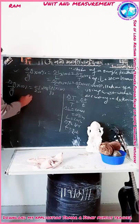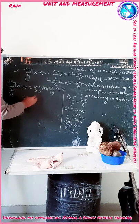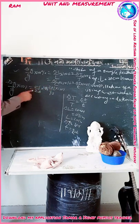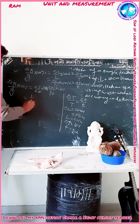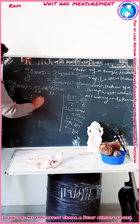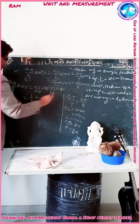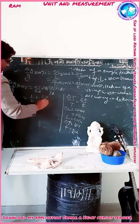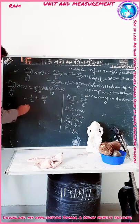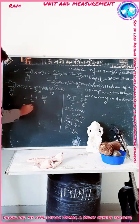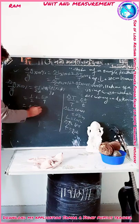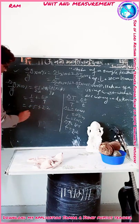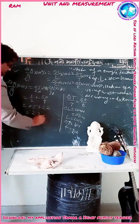Simplifying: the 100 will cancel and we get 1 upon 2, and this 10 is also cancelled, so we get 20 upon 9. Finally, that is 0.5 plus 2.2 is equal to 2.7 percentage.